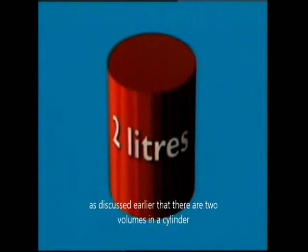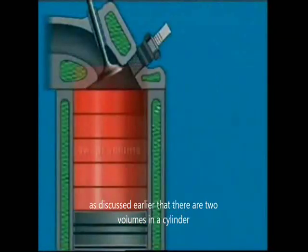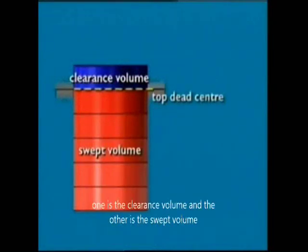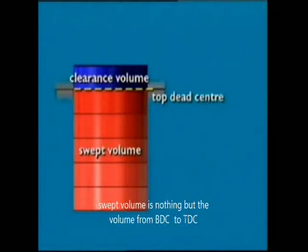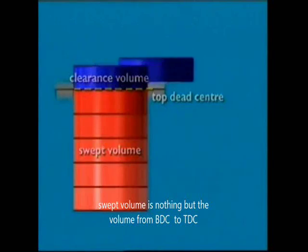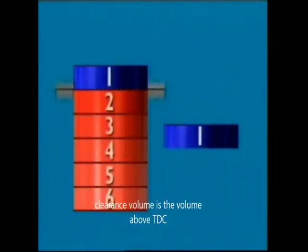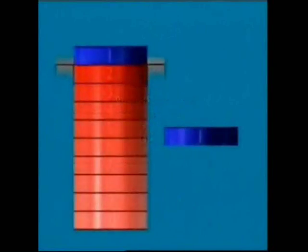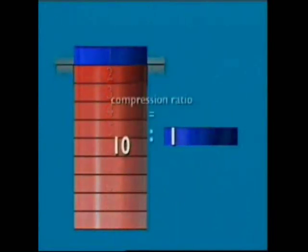There are two volumes in a cylinder: the clearance volume and the swept volume. Swept volume is the volume from BDC to TDC, and clearance volume is the volume above TDC. Putting these volumes in a ratio gives us the compression ratio.